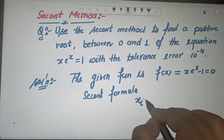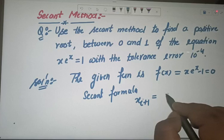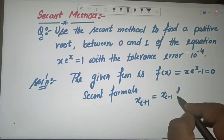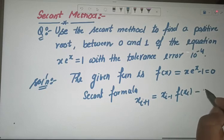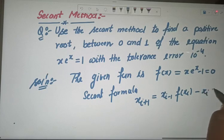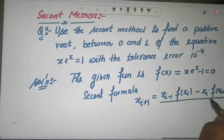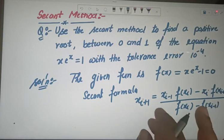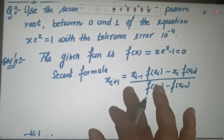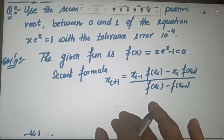The secant formula is: x_{i+1} = x_{i−1} − f(x_{i−1}) · [x_i − x_{i−1}] / [f(x_i) − f(x_{i−1})]. That is your secant formula, and you can work with this formula very easily.